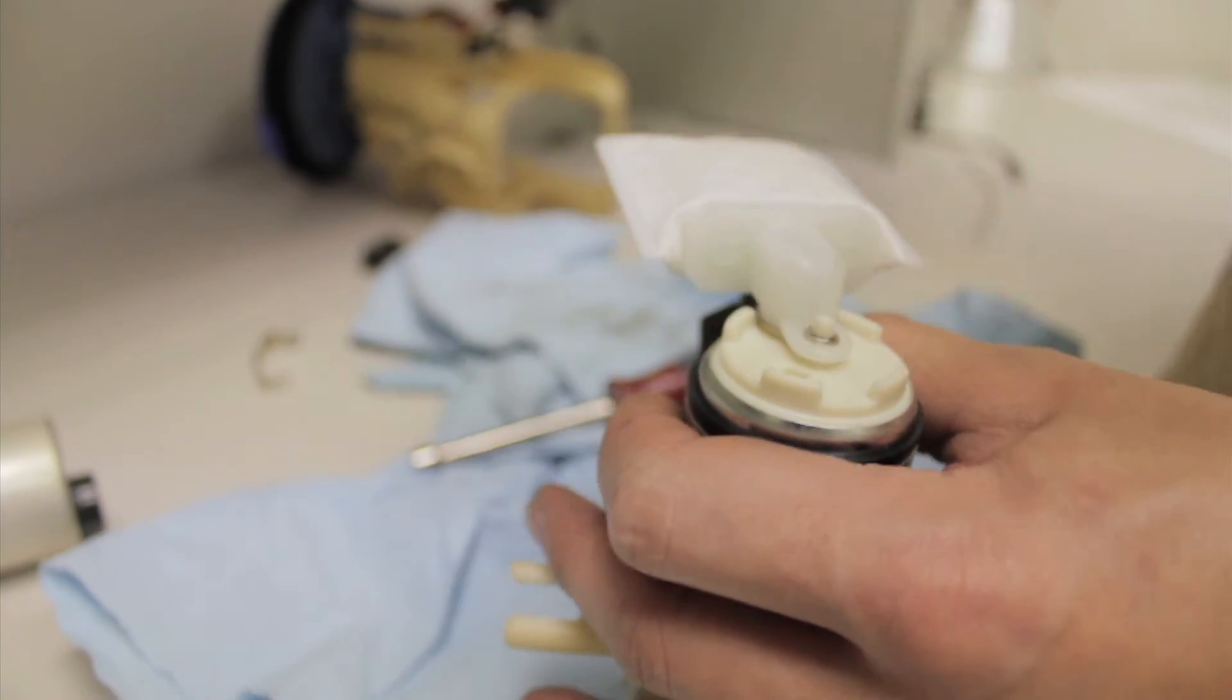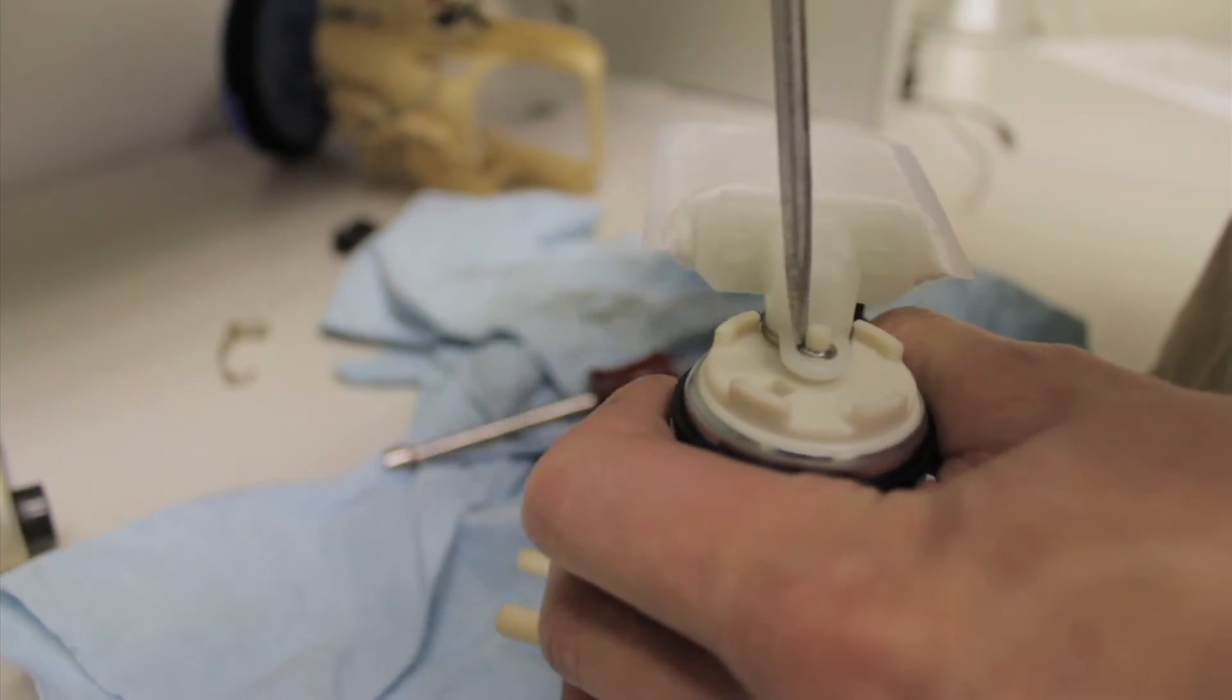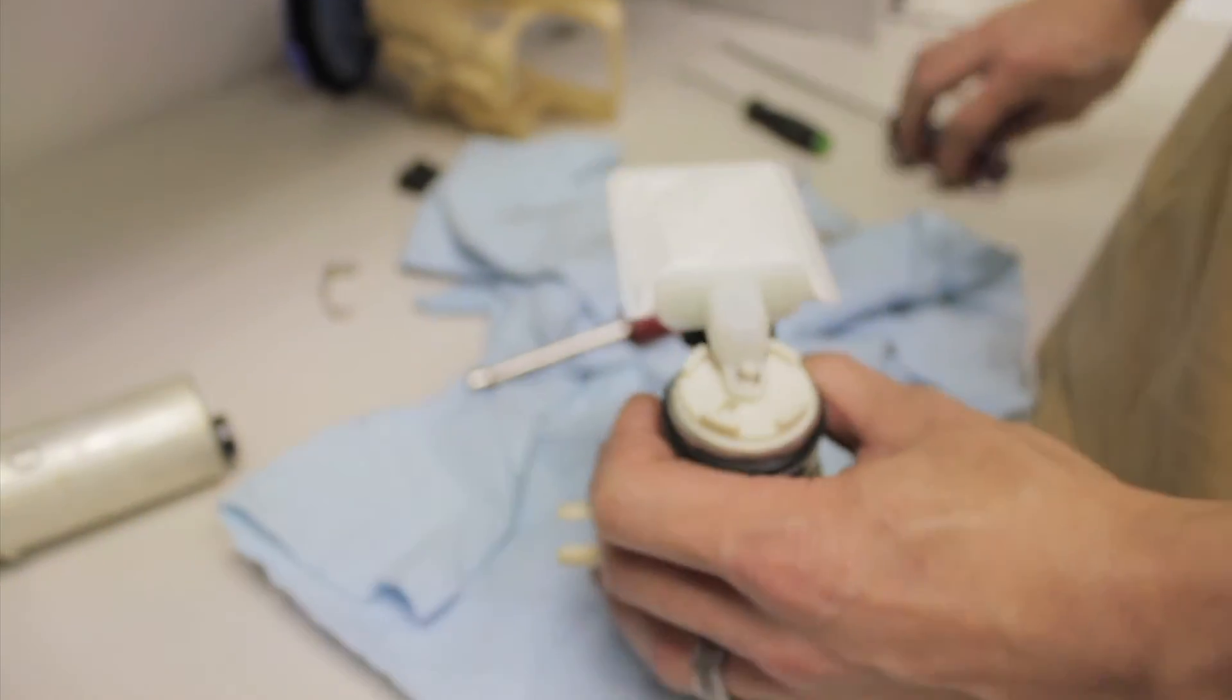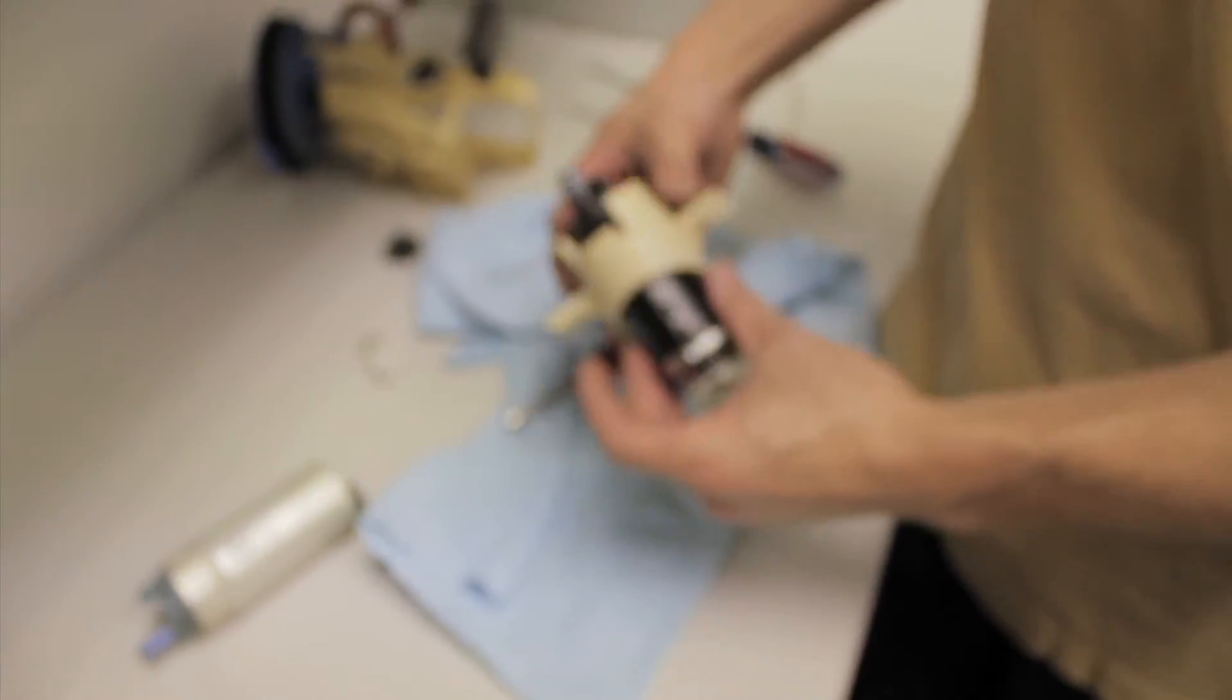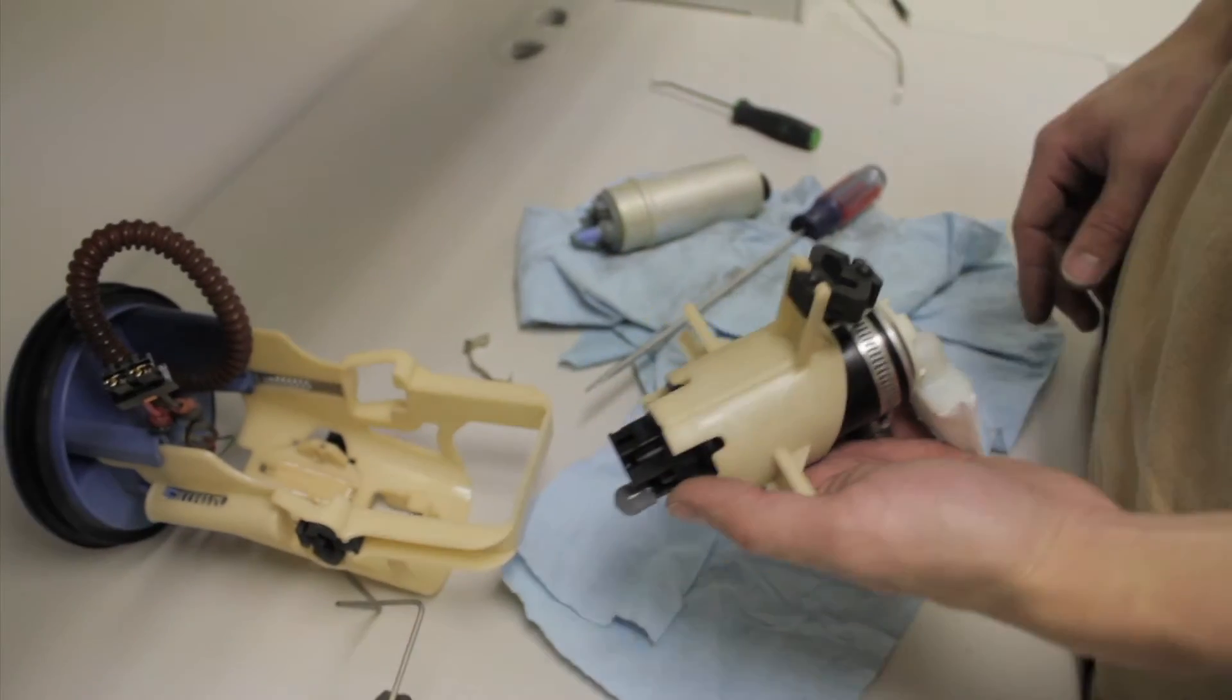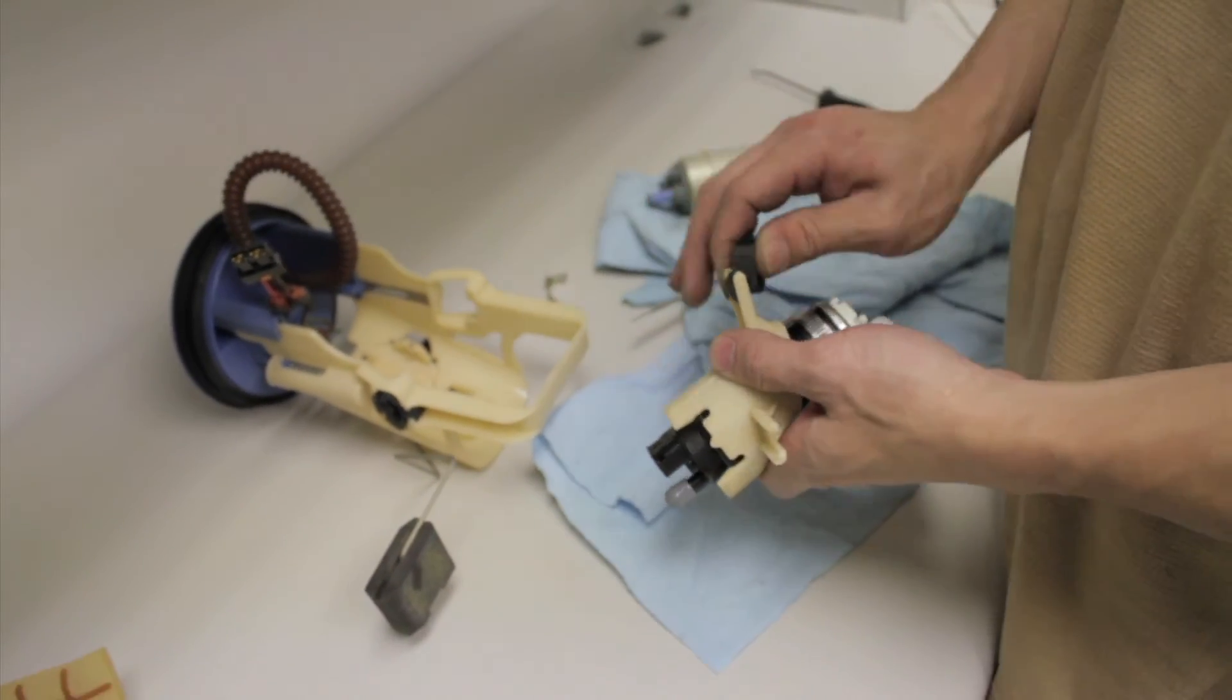After that's installed, what I'll also do is I'll grab a flathead screwdriver and just go around and make sure it's secure on the pump, which it is. So now what I'm going to do is install the entire carrier back into the hanger. So what I like to do is remove all these little rubber grommets, the little suspenders basically just makes the install a little bit easier.